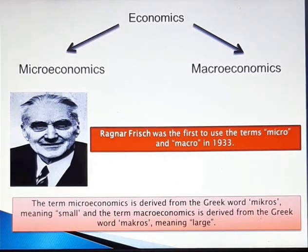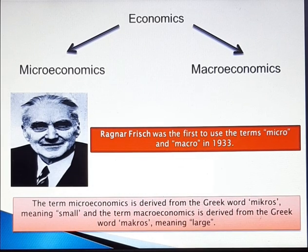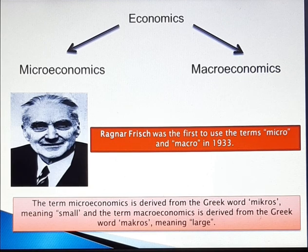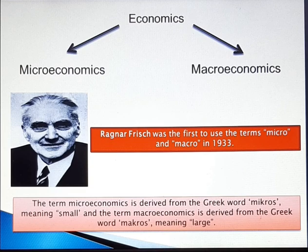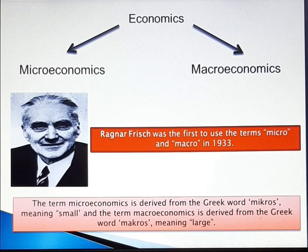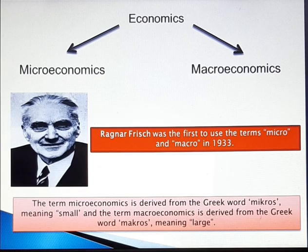The term microeconomics is derived from the Greek word 'micros' meaning small, and the term macroeconomics is derived from the Greek word 'macros' meaning large. Thus, microeconomics is related to the study of individual economic units, while macroeconomics is a study of how the economy works as a whole. Now let's understand the definitions of microeconomics and macroeconomics.